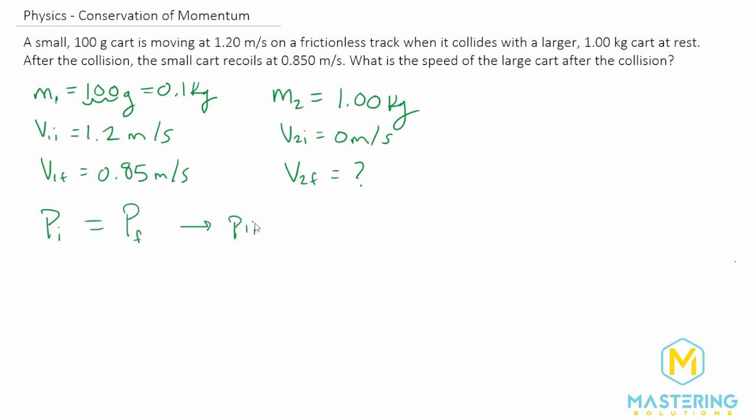So we can break this all up here. So P1 initial, or the momentum of the first cart, plus the momentum of the second cart initial is equal to P1 final plus P2 final.